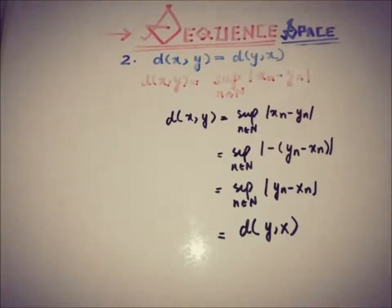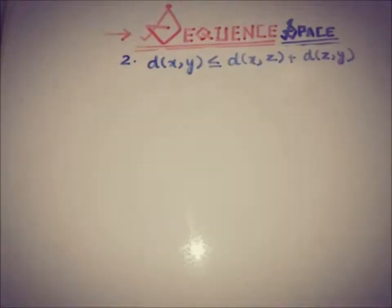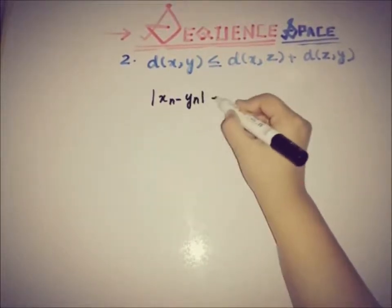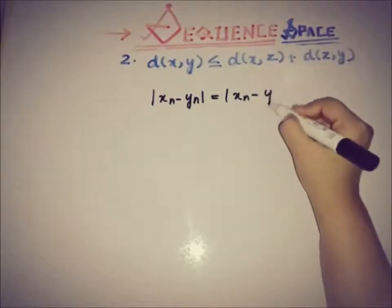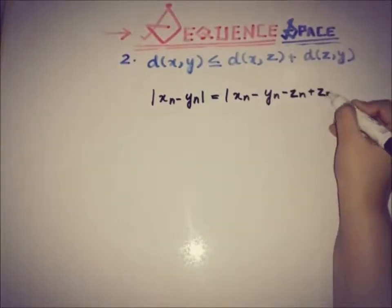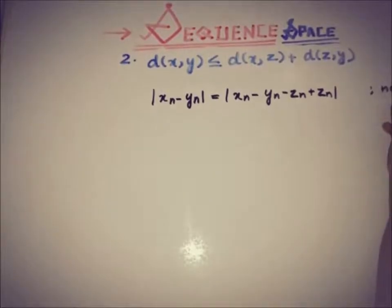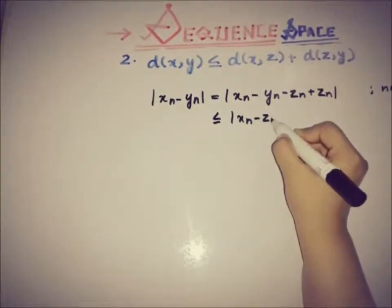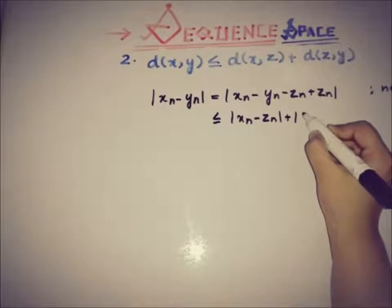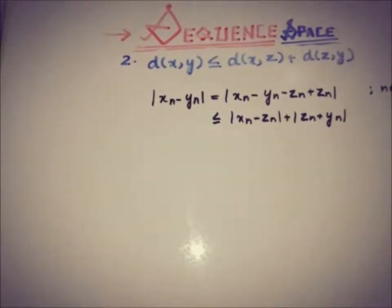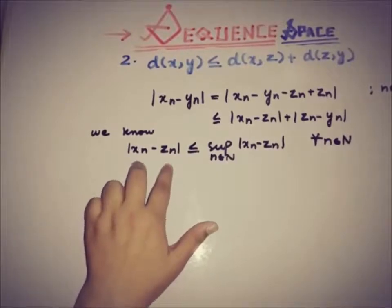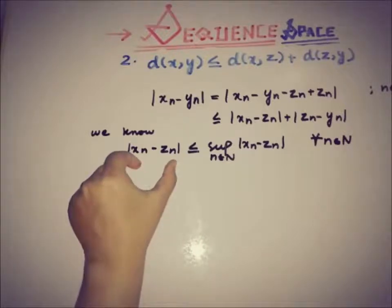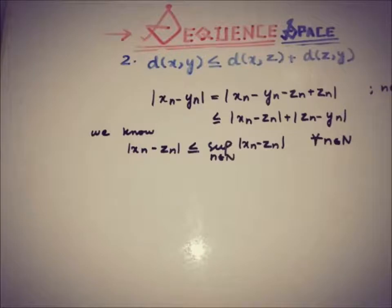Now moving toward the third property, the triangle inequality. We know that |x_n minus y_n| equals the absolute value of (x_n minus z_n) plus (z_n minus y_n), where we add and subtract a sequence z_n. We know that each term is smaller than or equal to the supremum of the sequence by the definition of supremum.